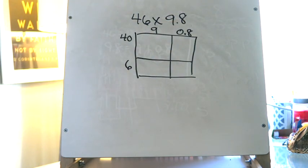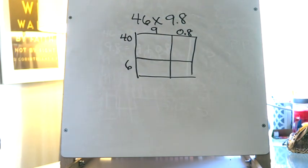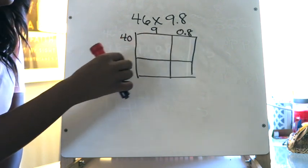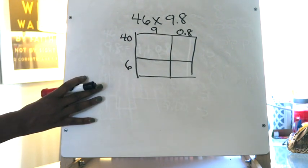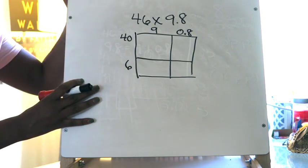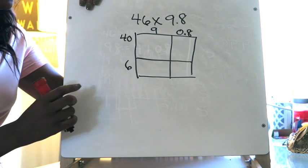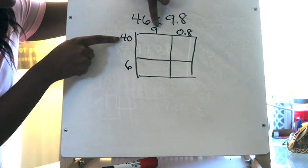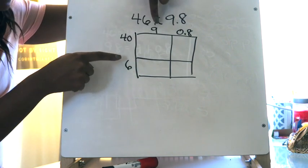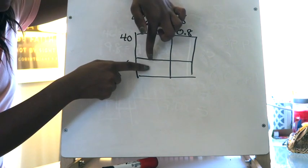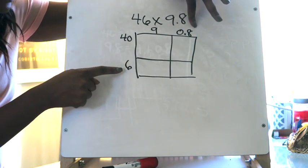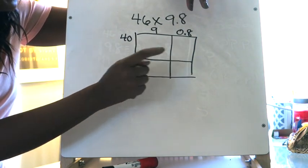Before I start filling in this diagram I want to talk about the decimal — the 8 tenths. We're going to be moving this decimal out of the way to make the multiplication easier. Once your diagram is set up correctly, think of it almost like a multiplication chart: the product of each pair of factors goes in the corresponding box.